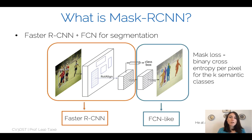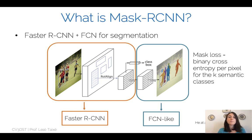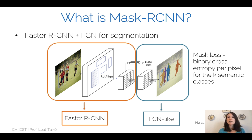This combination is Faster R-CNN plus a FCN-like mask head. We have the Faster R-CNN architecture with regions of interest pooled using an operation similar to ROI pooling but adapted — called ROI align. The idea is to convert any bounding box size to a fixed representation so we can predict the class and box, and with additional convolutions also predict the mask. The mask loss is binary cross-entropy per pixel for each semantic class, directly predicting the semantic class for that particular instance.